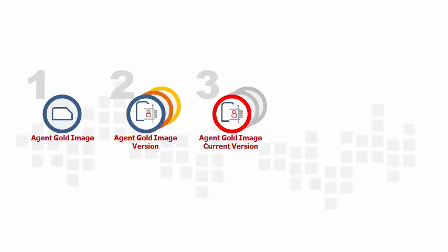Step 3: Set the version to current. You set one of the many versions to current so that it is used to update your existing management agents. Step 4: Subscribing Management Agents to an Agent Gold image. Now associate a management agent with a particular Agent Gold image. This is a prerequisite for updating management agents using a particular Agent Gold image version.